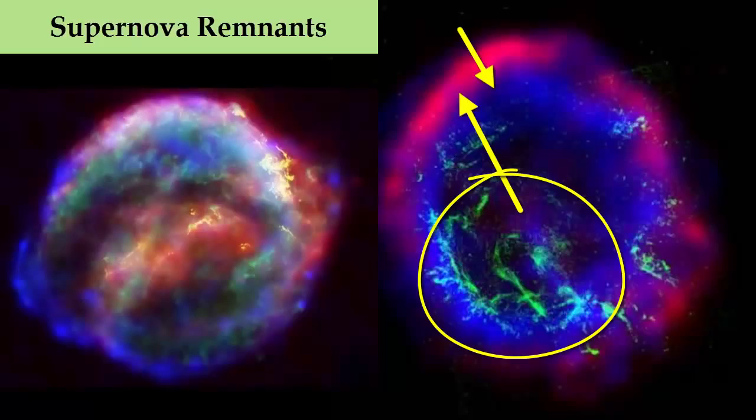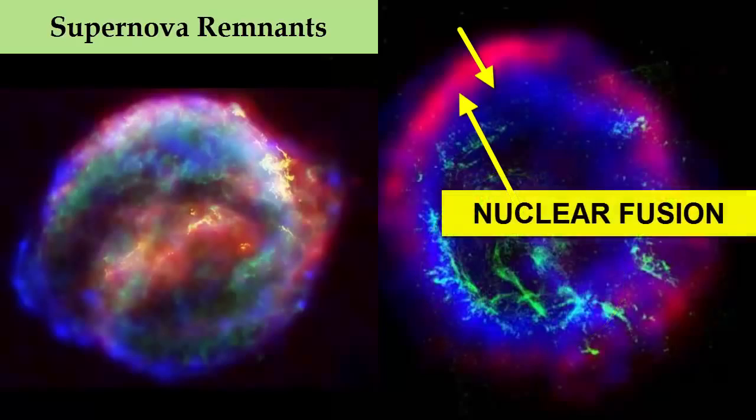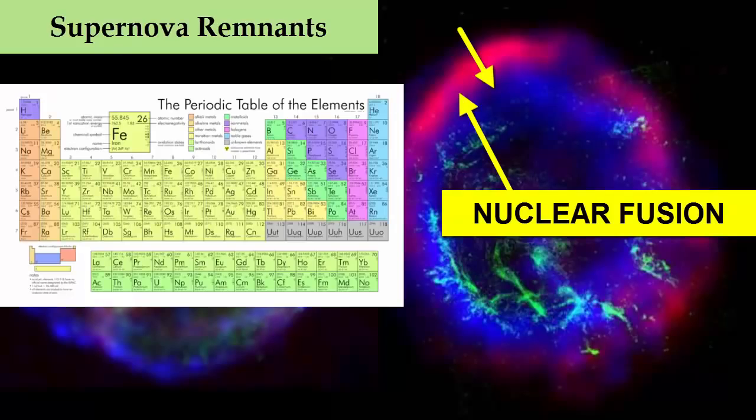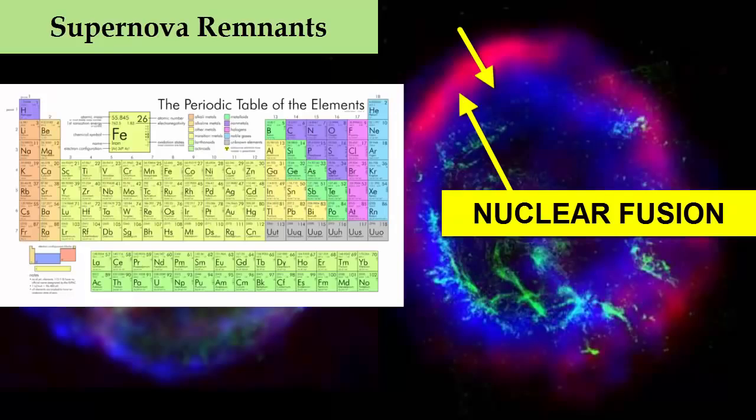So how do we form elements heavier than iron? The shock wave of the supernova, which produces nuclear fusion and all the other elements currently found on the periodic table. Now what?